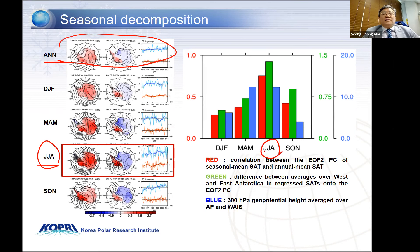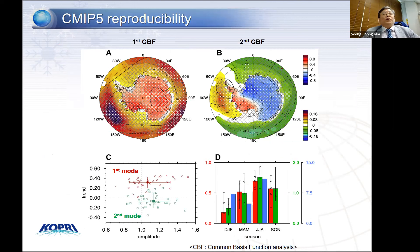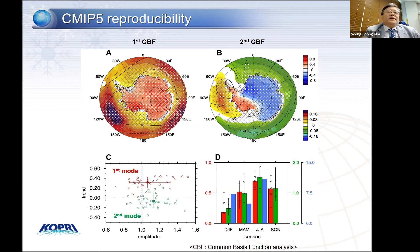The green bar is the difference between temperature in east and west, and the blue color shows the 300 hectopascal geopotential height anomaly field, which also gives the largest contribution in the austral winter season. Because the observational period is relatively short, we also checked whether the CMIP5 models are able to reproduce these features, using the so-called Common Basis Function analysis to evaluate the model performance. The CBF1 mode and CBF2 mode correspond to EOF1 and EOF2, because the common basis function is more or less a projection of EOF1 and EOF2 from the observation.